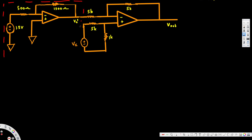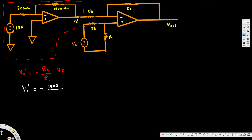It's easy to find out the Vout prime voltage for the first inverting op-amplifier. The generic equation is: Vout prime = negative RF over RI, multiplied by the voltage source. In our case, RF is 1500 ohms and RI is 500 ohms, so Vout prime = negative (1500/500) times 1.5V = negative 3 times 1.5 = negative 4.5 volts. So Vout prime is negative 4.5V.